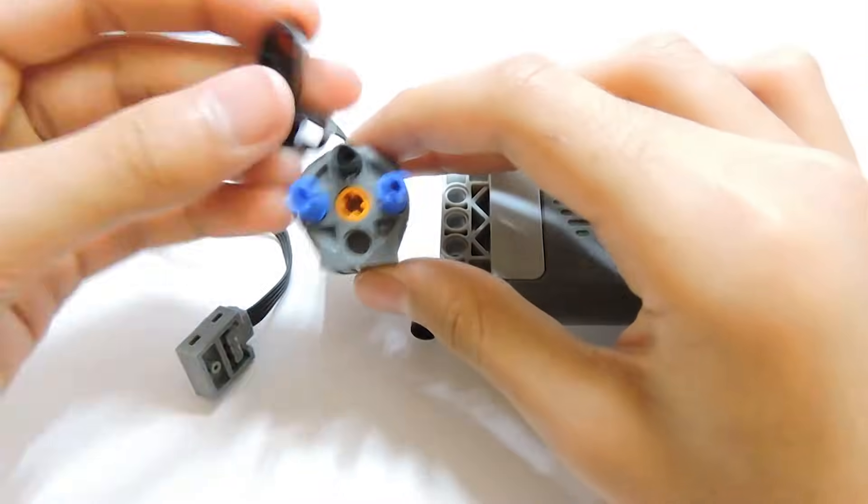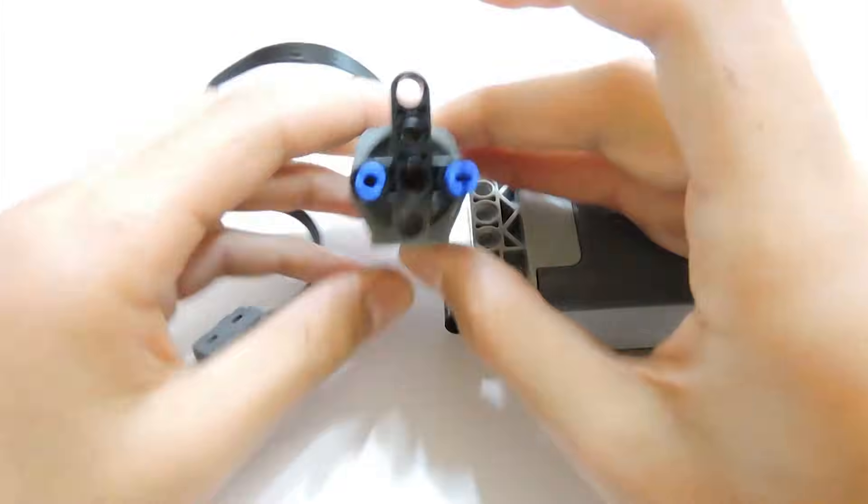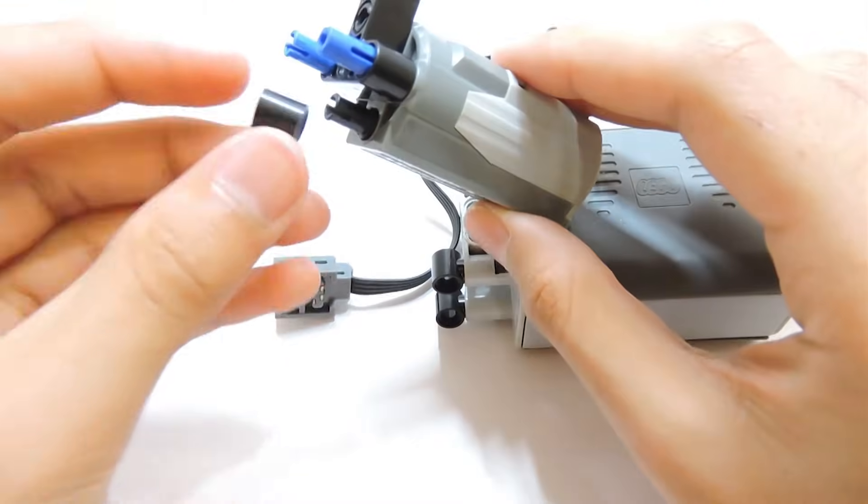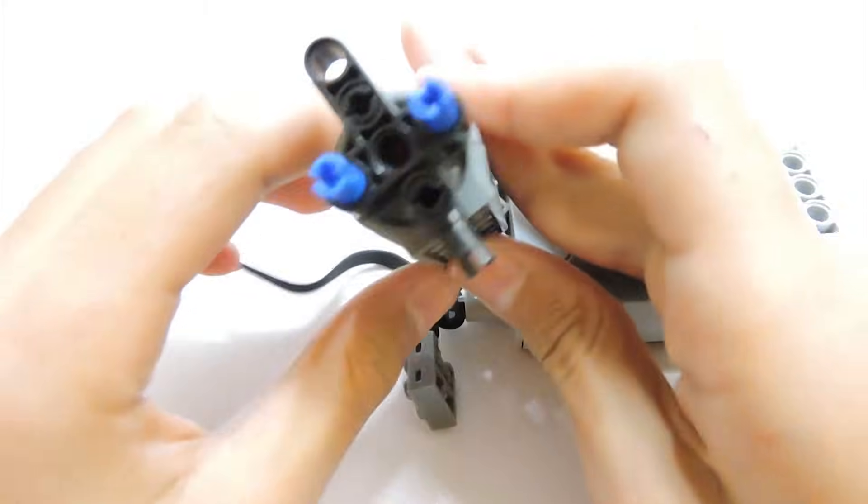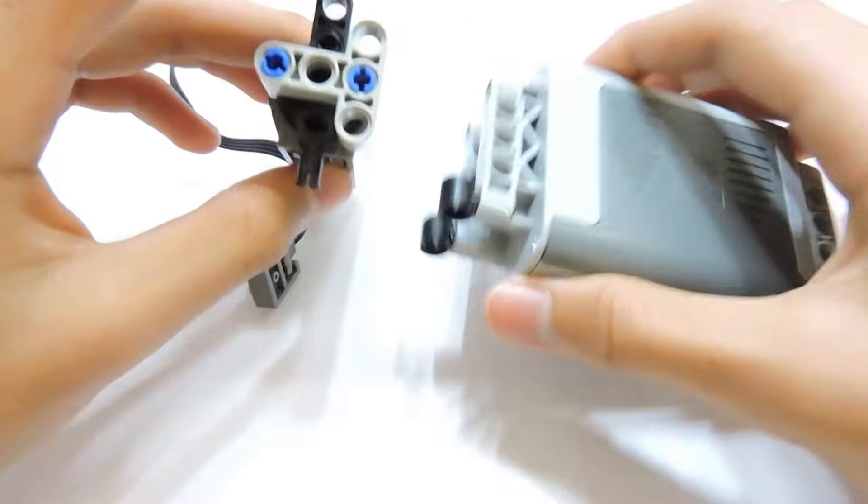After that, we attach one T-shaped beam with the help of the connectors. We also attach this piece here which we're gonna use later to better fasten the motor to the battery box. Now, we attach another T-shaped beam to the motor using the blue connectors.